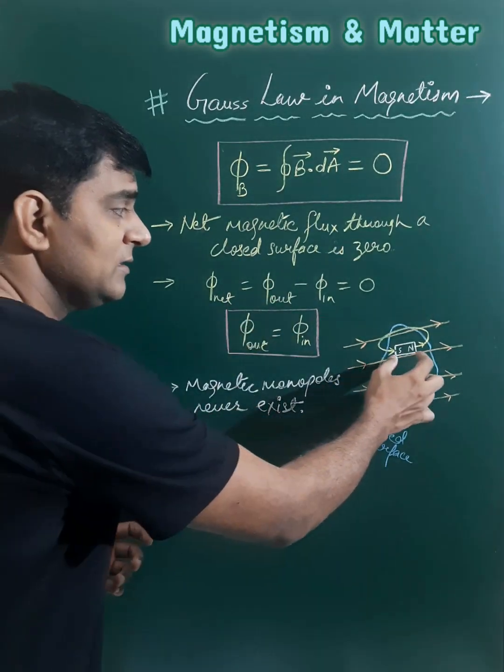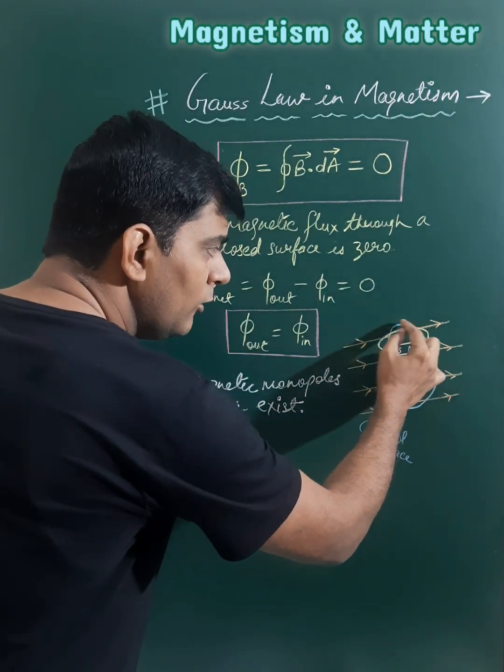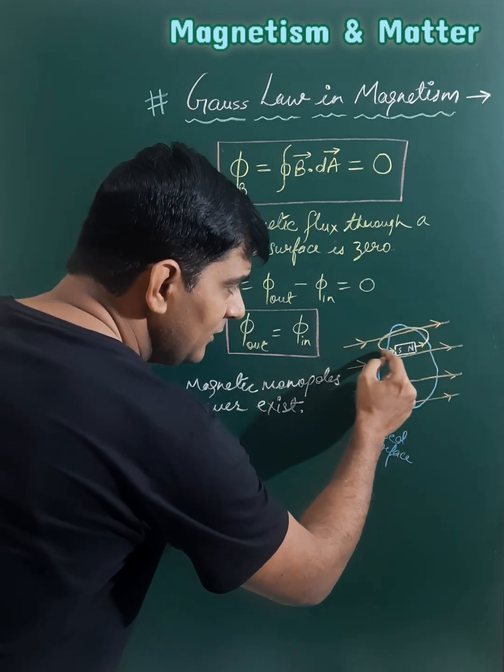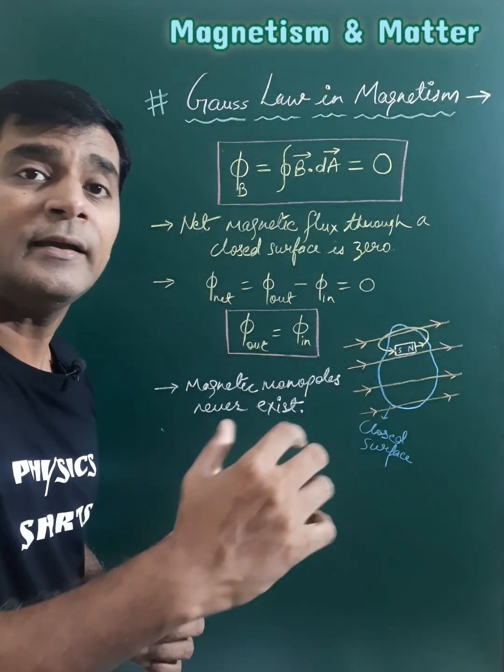Suppose if there is a magnet inside this closed surface, then the field lines always form a closed loop. So the field line which leaves this surface will again enter the surface, and the net flux again becomes zero.